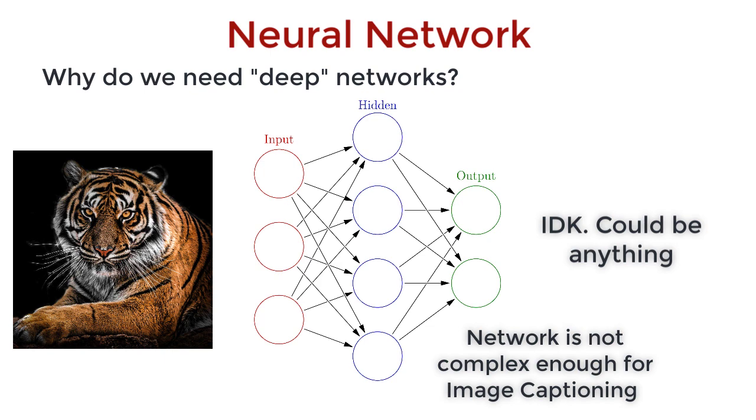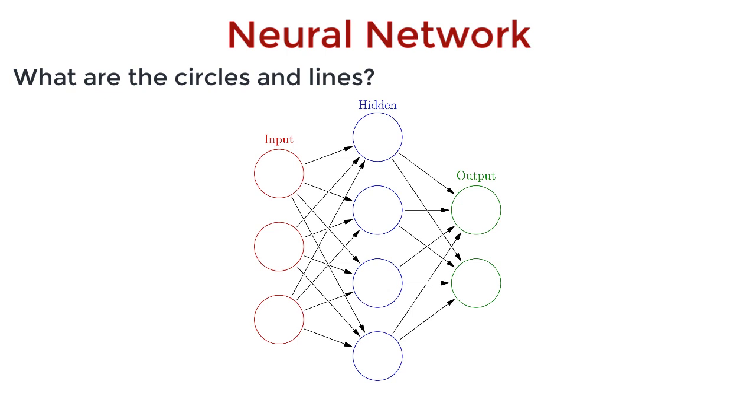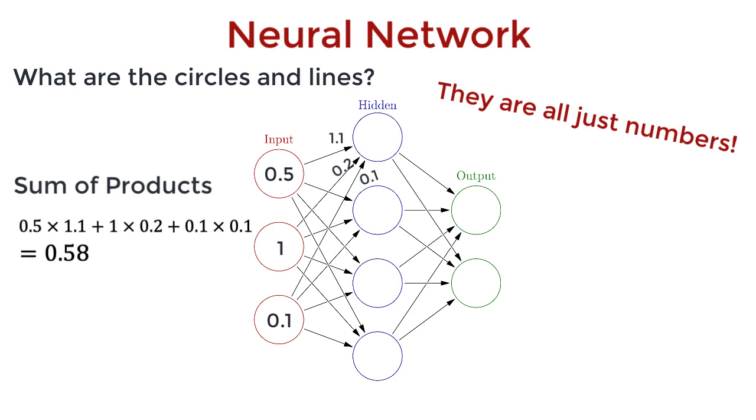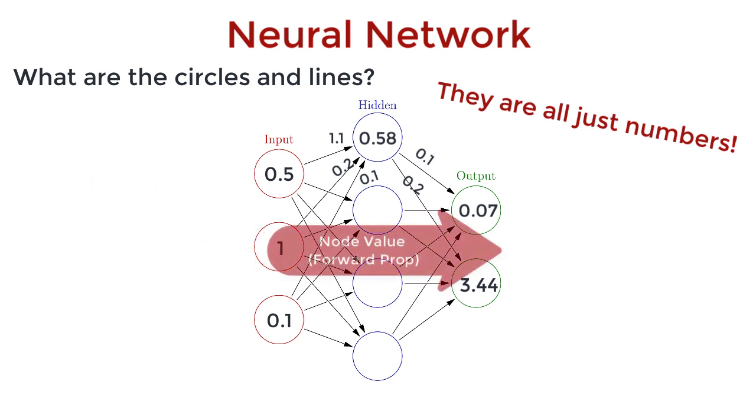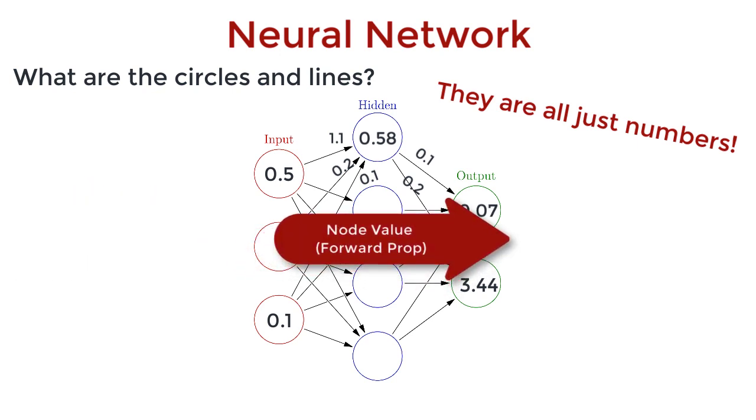But here's another basic question. What exactly are the neurons? These circles, what do they consist of? And what are these connections? What are these edges? Think of them all as just containing numbers or scalars. To compute the numbers in these nodes, just take the sum of products of all input neurons and their corresponding edge weights, from the left layers to the right. And this is called the forward propagation of values.